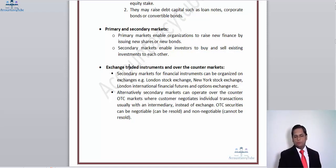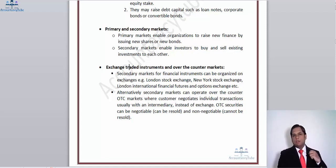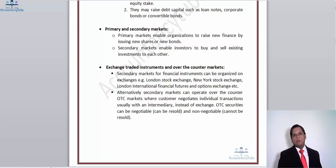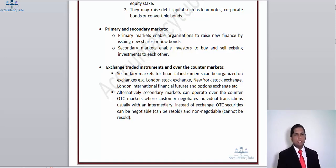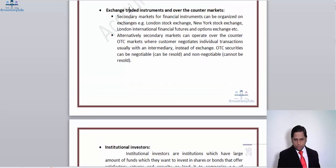Primary markets enable organizations to raise new finance by pricing new shares or new bonds — as with an IPO through a brokerage house. Secondary markets enable investors to buy and sell existing investments to each other. For instance, if I bought shares and later want to sell them after they have gained value, I go back to the stock exchange and sell to another willing buyer. This operation is nowadays done electronically, so it can be done from the comfort of your home.